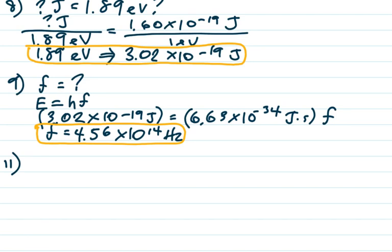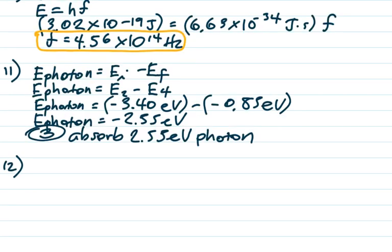Number 11. Hydrogen is going from level 2 to level 4. And it says why? Well, if it's bumping up levels, it's absorbing energy, not emitting it. So it's either 1 or 3. Is that a 0.85 EV photon or a 2.55 EV photon? From 2 to 4, let's take a look. When you do EI minus EF, you wind up with 2.55 EVs, negative because it's absorbed. And that's choice 3.